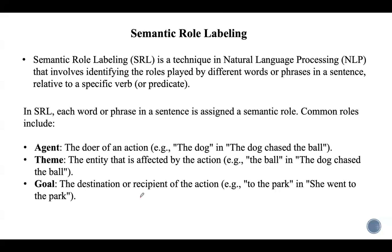In this lecture, let us discuss semantic role labeling, which is a technique that involves identifying roles played by different words or phrases in a sentence. This allows us to understand the meaning of a sentence in terms of who is performing the action, what type of action, where it is being performed, when it was done, and how it happened.